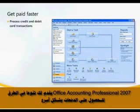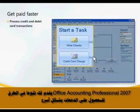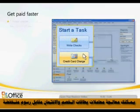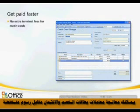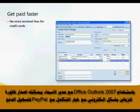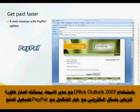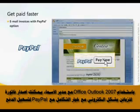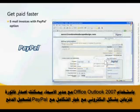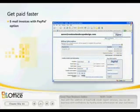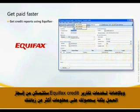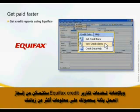Office Accounting Professional 2007 offers a variety of ways to get paid faster. You can process credit and debit card transactions for a low fee. Using Office Outlook 2007 with Business Contact Manager, you can invoice your customers electronically with an integrated PayPal option for easy payment. With the addition of Equifax credit report services, you can do business with confidence by having more information on your customers.